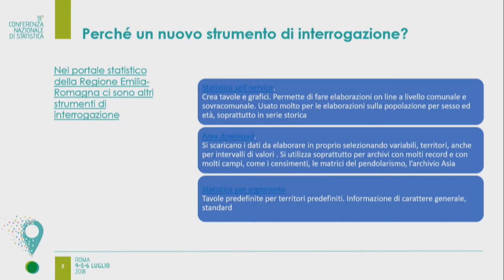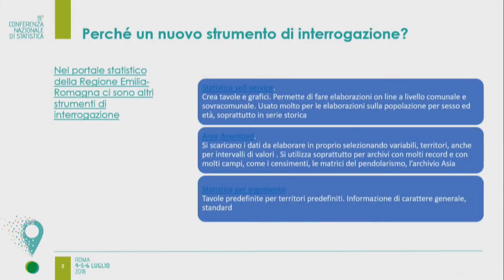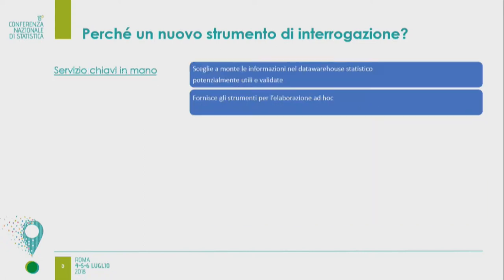Perché abbiamo creato questo nuovo strumento di interrogazione? In fondo ne avevamo già degli altri: la statistica self-service, l'area download e la statistica per argomento. Per due ordini di motivi. Innanzitutto forniamo all'utente informazioni chiave in mano, cioè una preselezione di informazioni di ampio raggio che prevede le sue esigenze informative. E poi questo servizio fornisce gli elementi anche per un'elaborazione ad hoc.